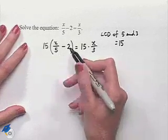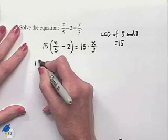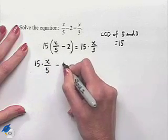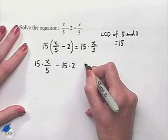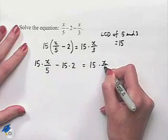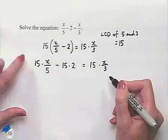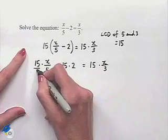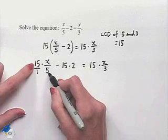15 will be multiplied times x over 5 minus 15 multiplied times 2. Now we notice that 15 can really be thought of as 15 over 1, and what that allows us to do is then cancel the common factor of 5 between numerator and denominator.